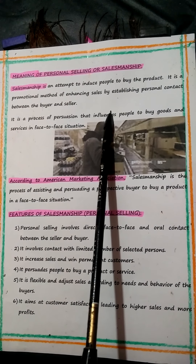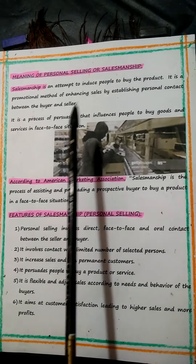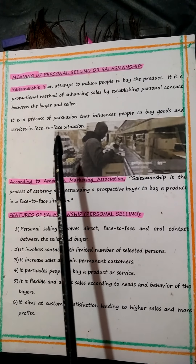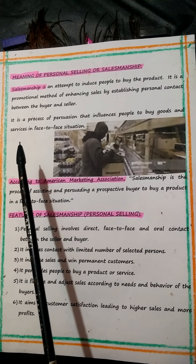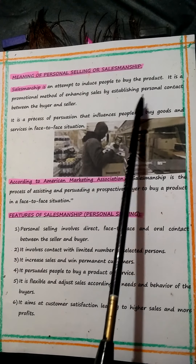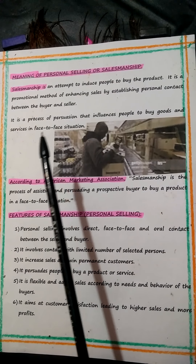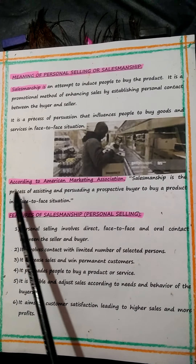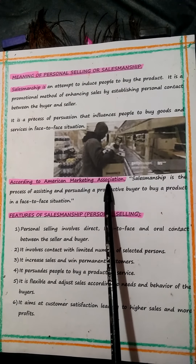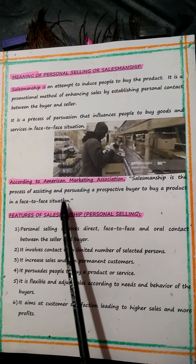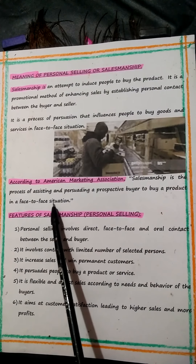Personal selling happens when the sales representative meets the potential customer for a sale — meeting face to face is very important. Sales representatives nowadays travel to other cities and countries for different multinational companies. Personal selling is of three types: order takers, order creators, and order getters — for example, selling cars, office equipment, Xerox machines, etc. The definition given by the American Marketing Association: salesmanship is a process of assisting and persuading a prospective buyer to buy a product in a face-to-face situation.